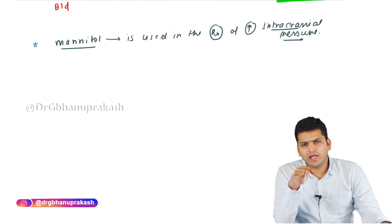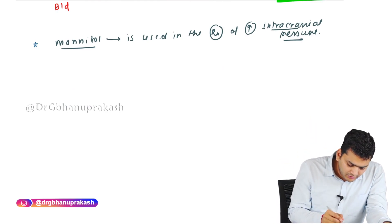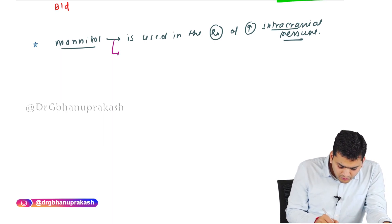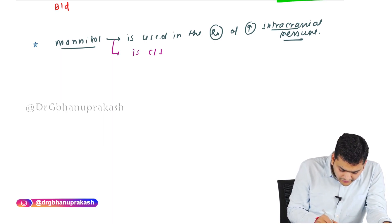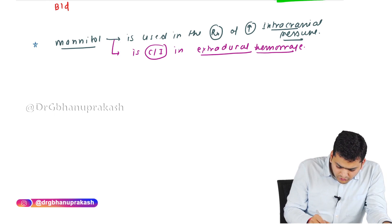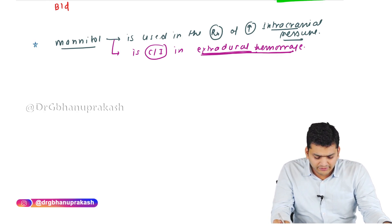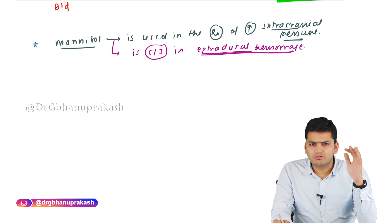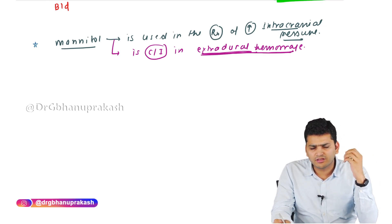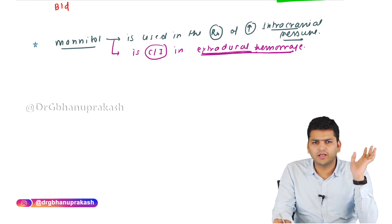However, there is one important condition where there is raised intracranial pressure but mannitol is contraindicated: extradural hemorrhage. Mannitol is contraindicated in extradural hemorrhage. It can be used in subdural hemorrhage and intracerebral hemorrhage, but not in extradural hemorrhage.